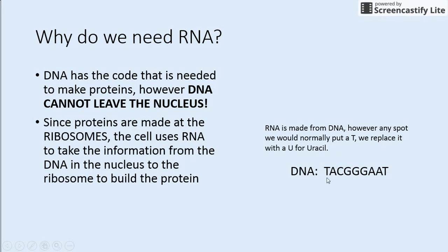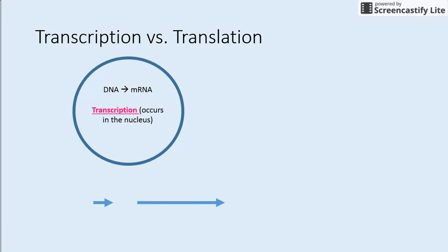Looking at this strand of DNA: T pairs with A, A would normally pair with T but now instead since we're making RNA we're going to put a U. C pairs with G, G pairs with C, and so on. So anywhere we would normally have a T in the molecule we now put a U.